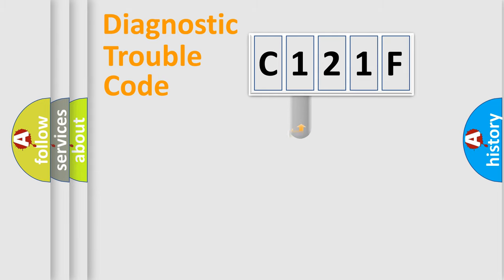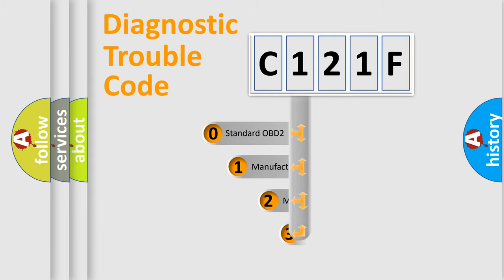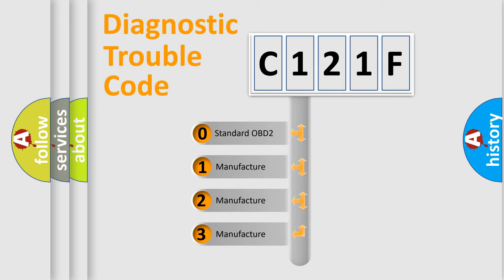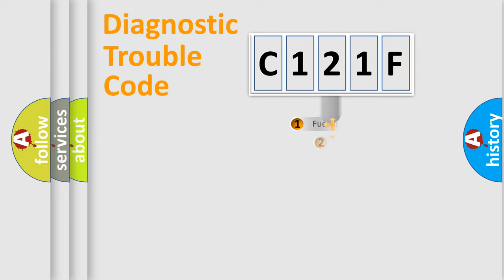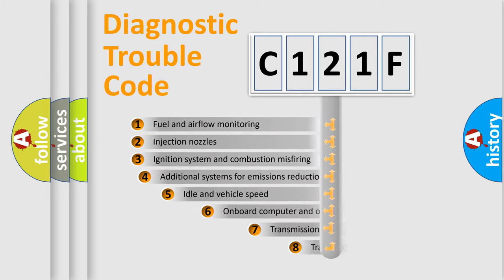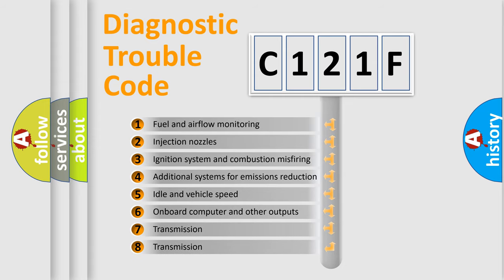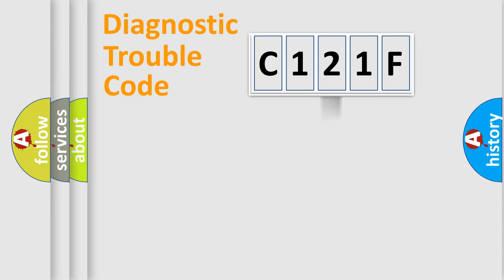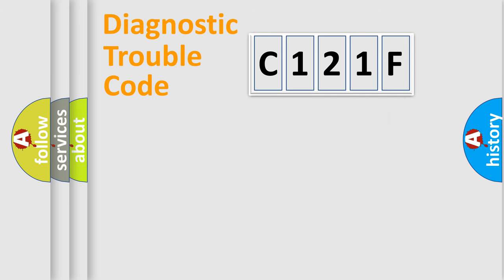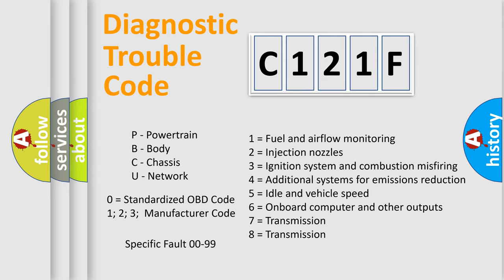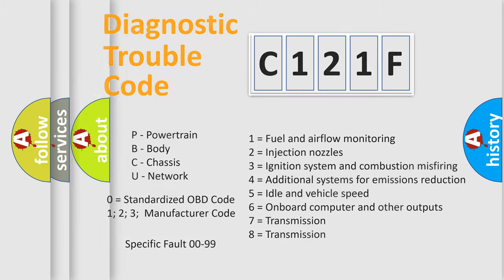This distribution is defined in the first character of the code. If the second character is expressed as zero, it is a standardized error. In the case of numbers 1, 2, or 3, it is a manufacturer-specific error. The third character specifies a subset of errors, and this distribution is valid only for the standardized DTC code. Only the last two characters define the specific fault of the group.